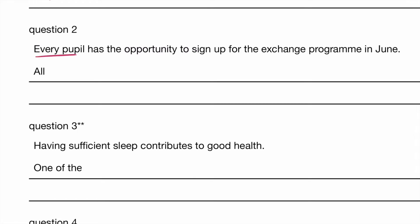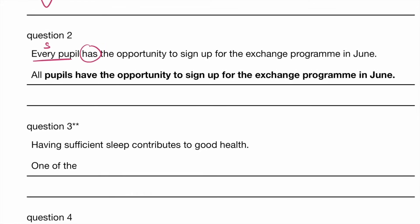Question 2: 'Every' is singular, therefore 'has,' which is singular, the opportunity to sign up for the exchange program in June. So the answer is: all pupils — notice we cannot use 'pupil,' so all pupils with S. Make sure 'all' is plural and 'have' is in the plural form as well. The opportunity to sign up for the exchange program in June. Don't forget full stops, capital J, and all that. Make sure you don't make spelling mistakes with tricky words.